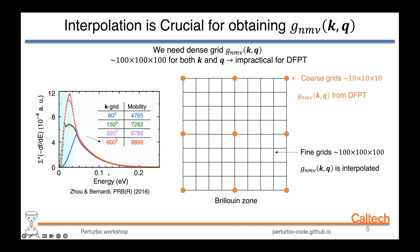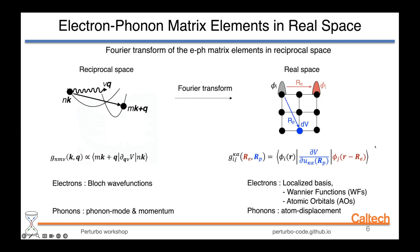The solution is to use a coarse grid of about 10×10×10 computed from DFPT and then use interpolation to reach finer grids of order 100 to 500. This works because in real space, the electron-phonon matrix elements are the Fourier transform of the reciprocal-space quantities. In real space the matrix elements represent the interaction between two localized bases — Wannier functions or atomic orbitals — perturbed by a phonon displacement.